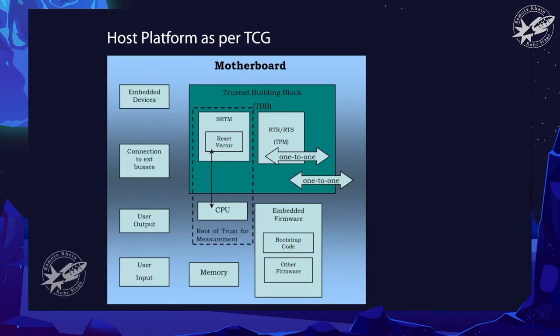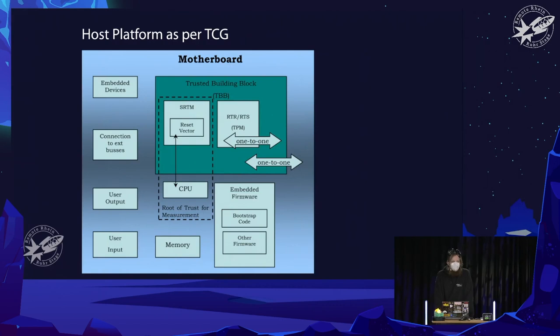But what is a platform anyway? An image from the specification shows a motherboard with many different hardware components: embedded controllers talking to peripherals, a USB controller, user input/output like mouse and keyboard, and processors — where firmware is stored — and where the TPM is actually part of the surface. The TPM can be placed alongside the CPU as a co-processor and can also be connected from the outside.